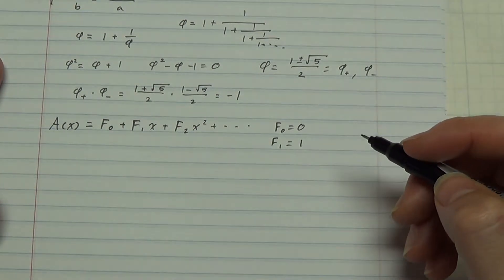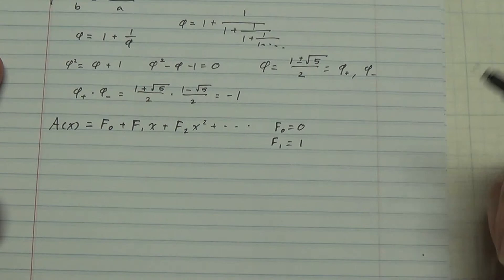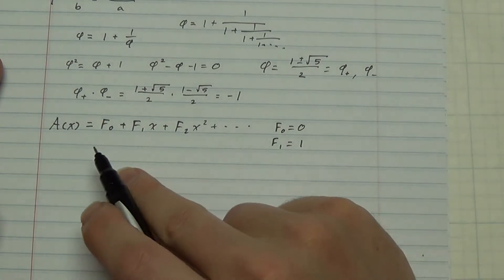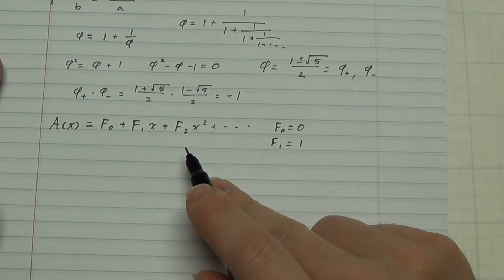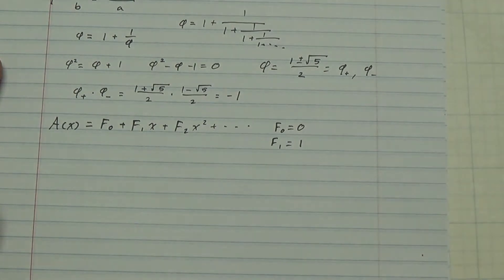So the Fibonacci sequence is 0, 1, 1, 2, 3, 5, 8, 13, and so forth. So this generating function is 0 plus x plus x squared plus 2x cubed, and so forth.